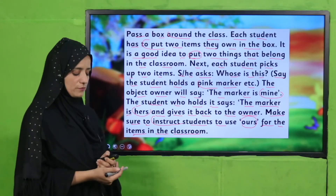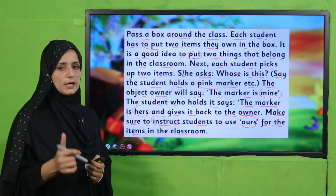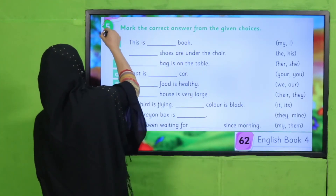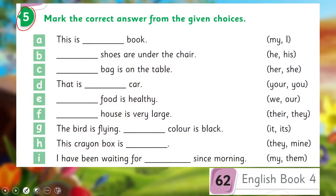Good! I hope you have done it and enjoyed it — good job! Now open your book to page 62, question number 5. Solve question number 5: mark the correct answer from the given choices and write the answers in the blanks in your book. Perform this individual activity in your class.